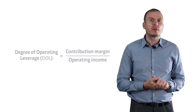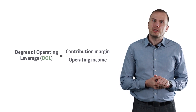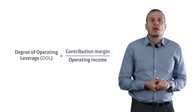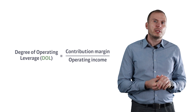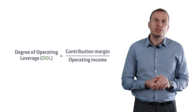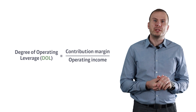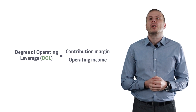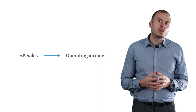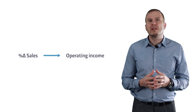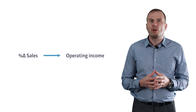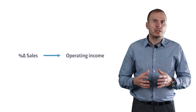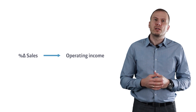Since we compare high and low operating leverage, there must be some way to measure it — and there is. We measure it in degrees. The degree of operating leverage (DOL) is computed by dividing contribution margin by operating income. It is a measure of how, at a given level of sales, a percentage change in sales volume will affect profits.